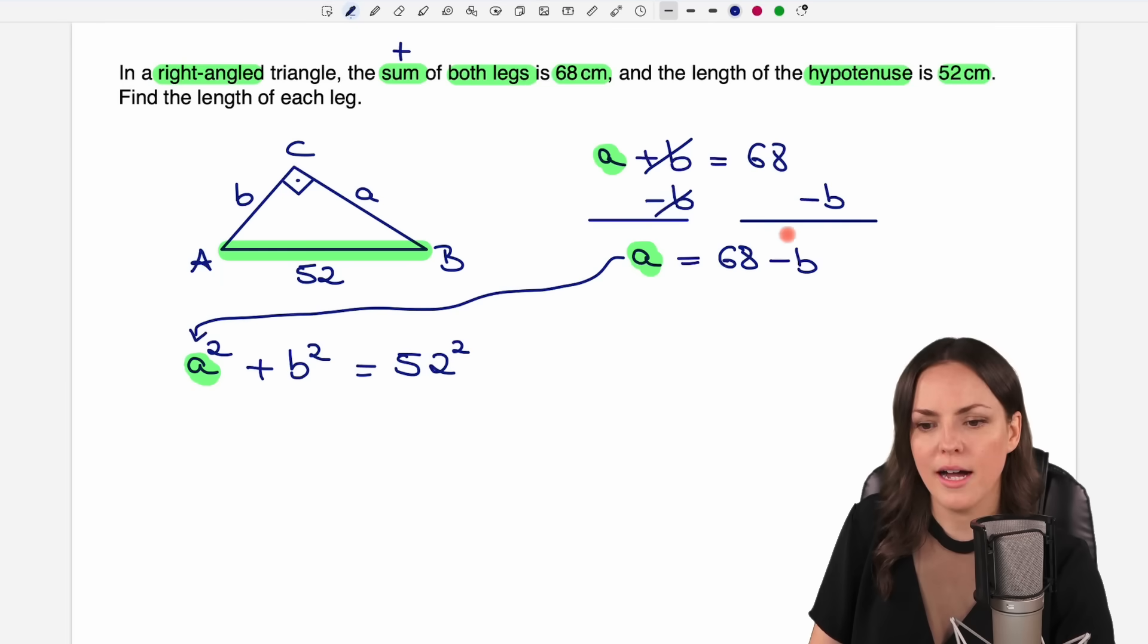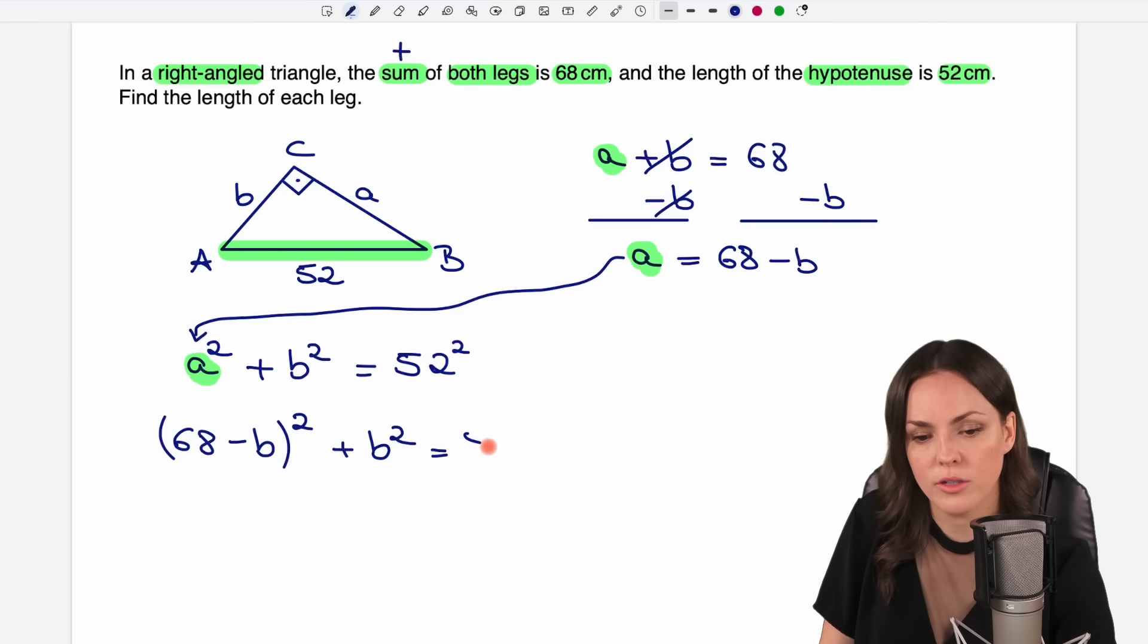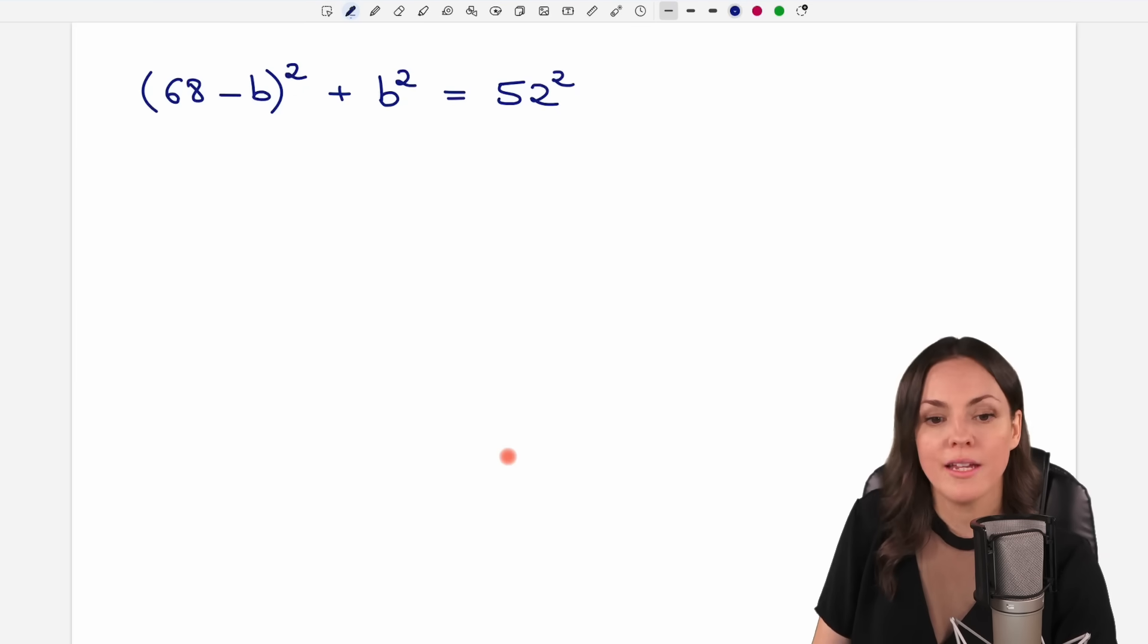So now I can insert this here. So instead of A, I take the 68 minus B and I have to square this. So I write it in parentheses, this whole thing and square it. And then I have the rest of the equation, which looks like this. But now I have one equation and there is only one variable in here. Only B is my variable.